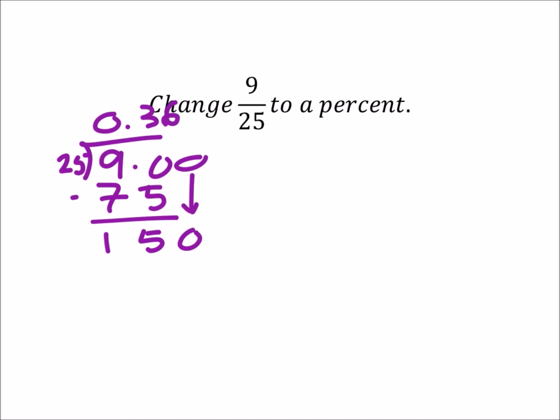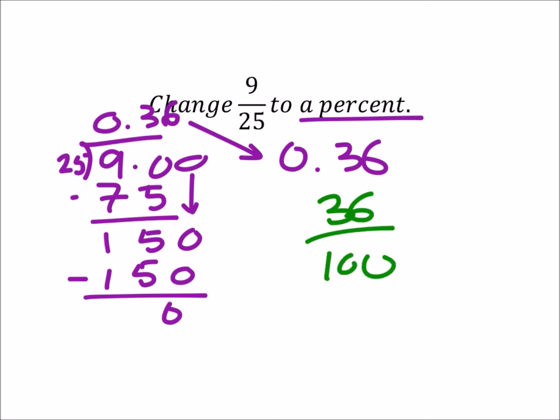So this right here is our decimal, right? Six times 25 is 150. We have zero remainder on this thing. So my decimal is 0.36, but what we really wanted here was a percent. So this is the same as 36 hundredths, if that's how you want to look at it. And the hundredths is the percentages, so it's 36%.